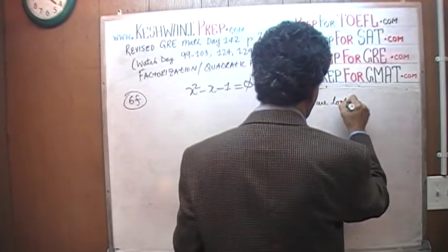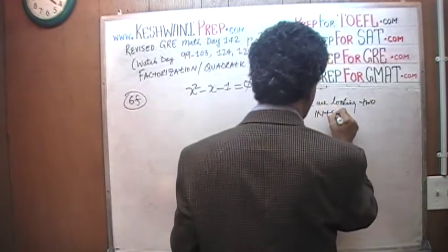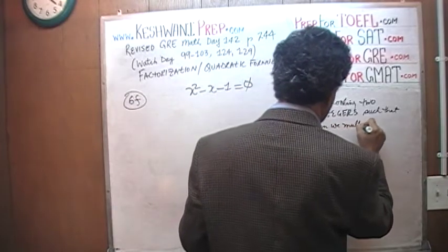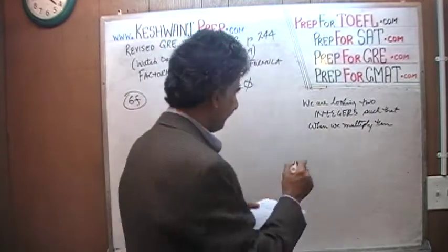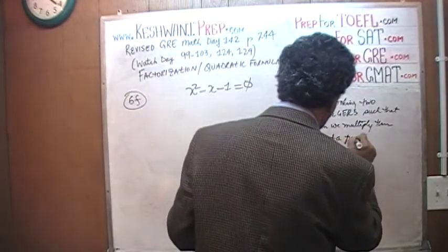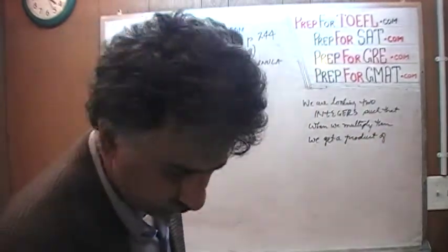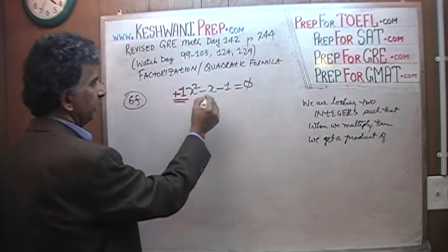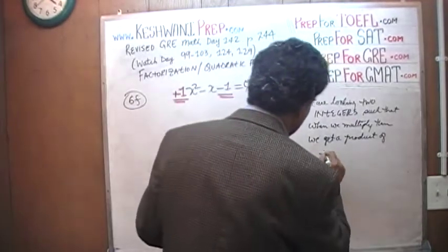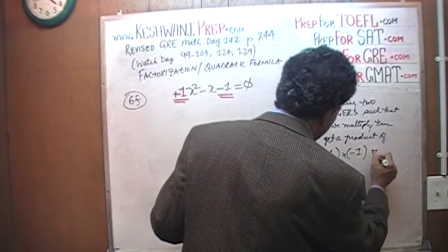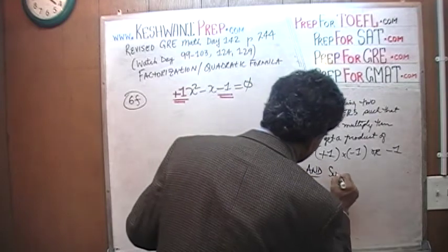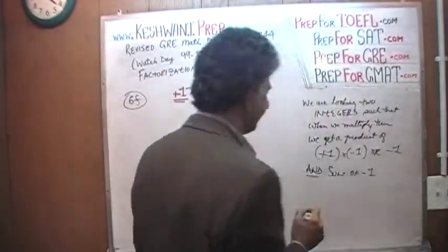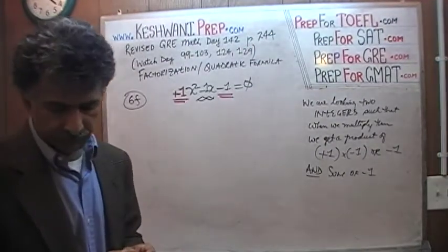We are looking for two integers such that when we multiply them we get the product of the coefficient of x squared and the constant. The coefficient of x squared is positive 1, and the constant is negative 1, so we need a product of positive 1 times negative 1, which is negative 1. And their sum must equal the coefficient of the middle term, which is negative 1. Those are the two conditions we have to fulfill.